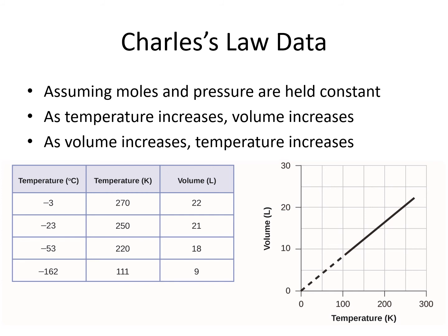We can see that linear relationship by graphing Charles' law data. We could put volume on the y-axis and temperature in Kelvin on the x, or vice versa. The graph should show a straight line such that as temperature goes up, volume goes up, and so on.